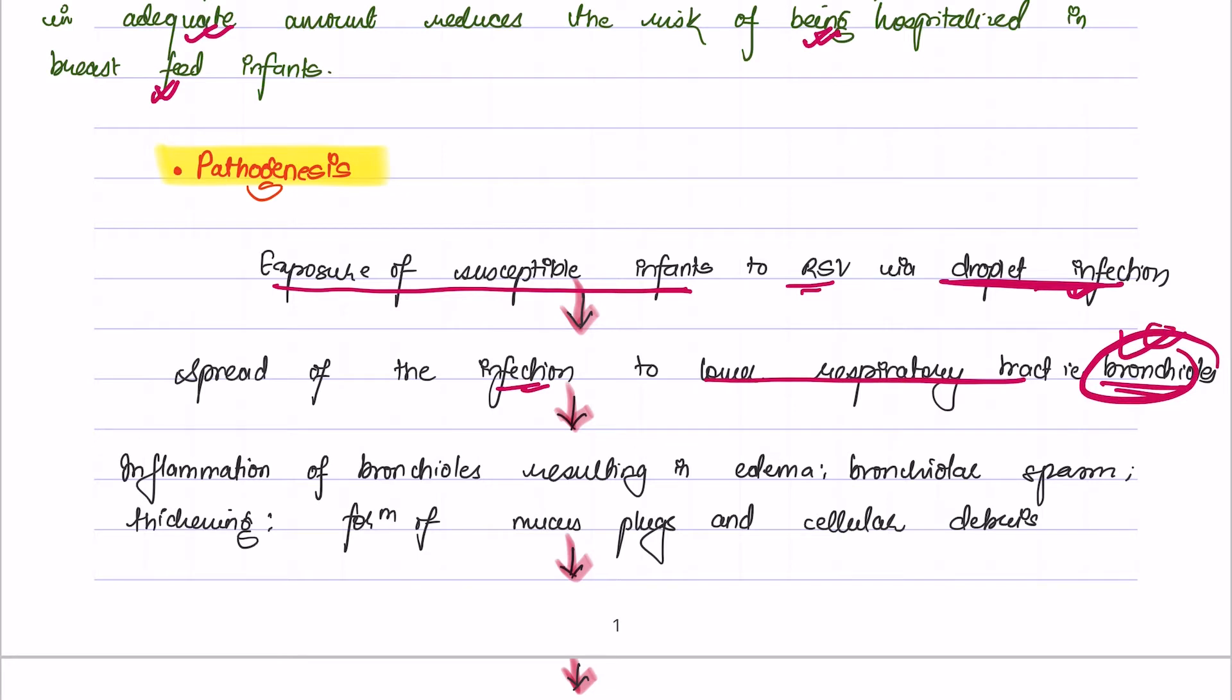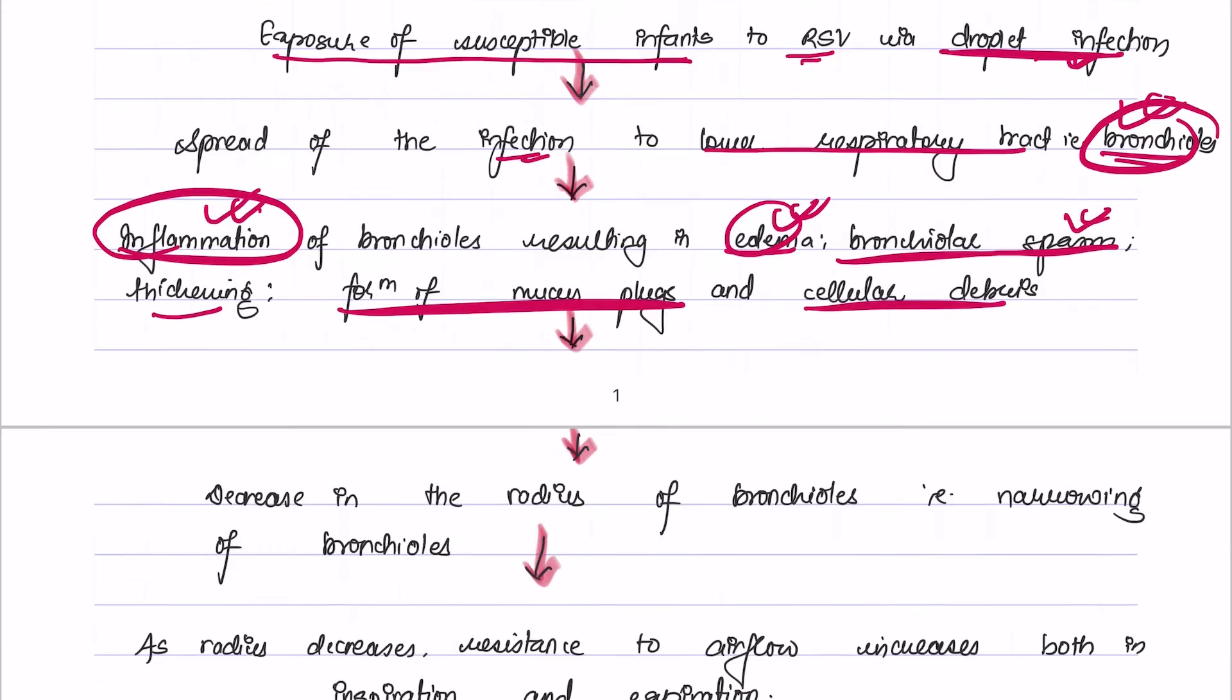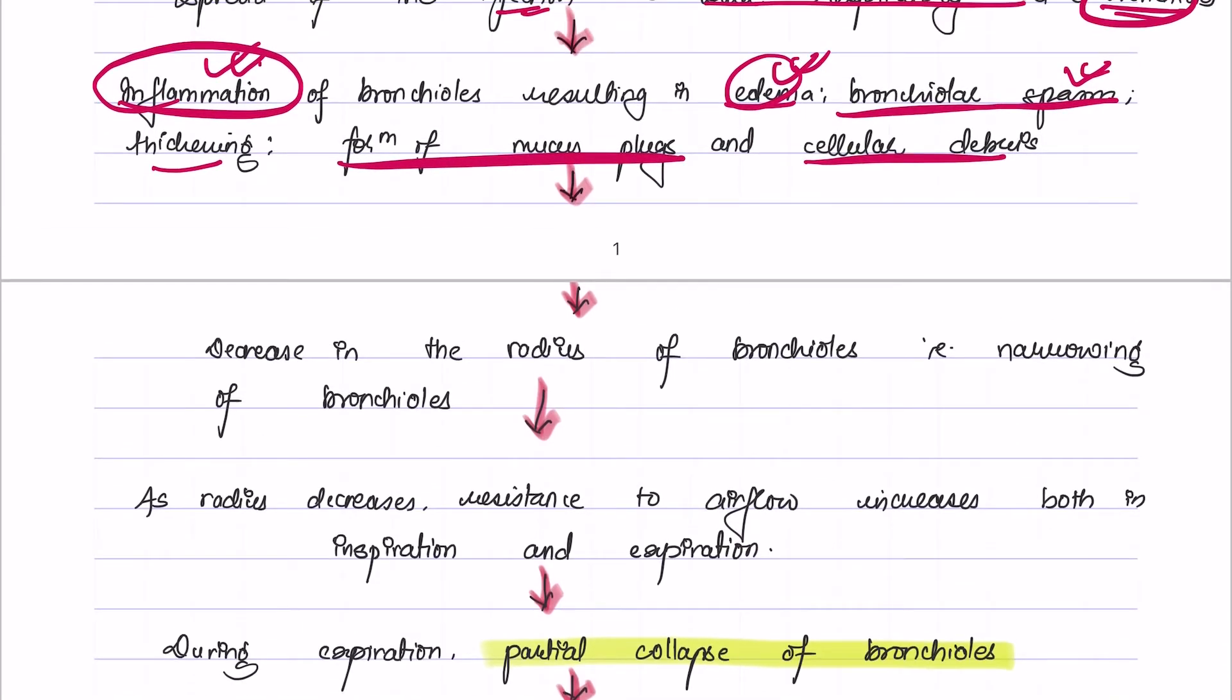There will be inflammation of the bronchioles and this inflammation results in edema, bronchial spasm, thickening, and formation of mucus plus cellular debris. Due to these changes in the bronchioles, it results in decreasing the radius of the bronchioles, that is narrowing of the bronchioles.